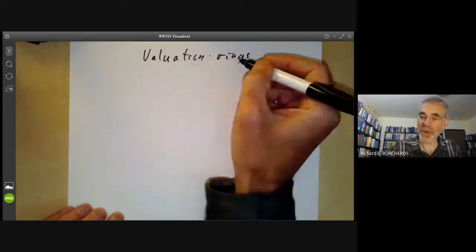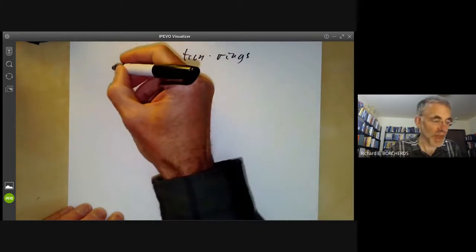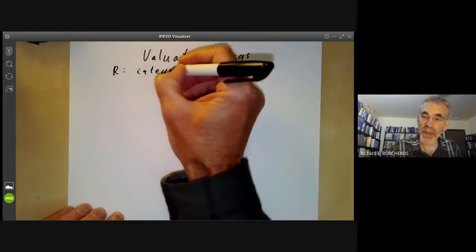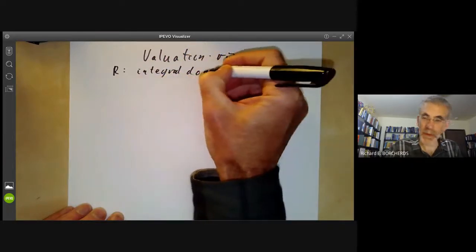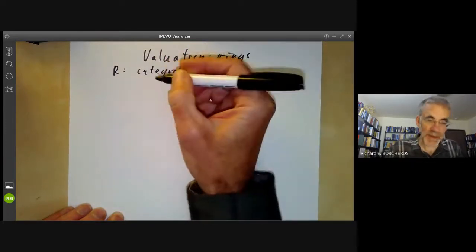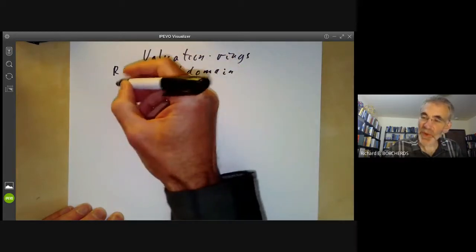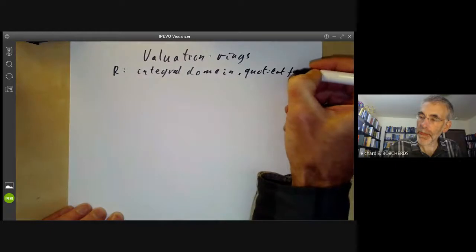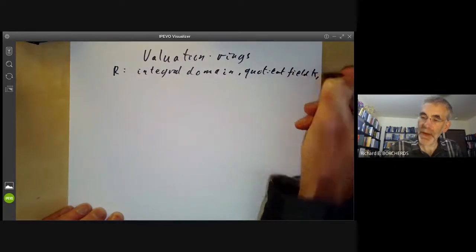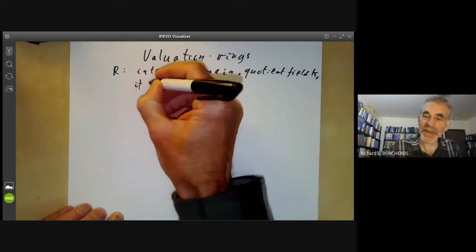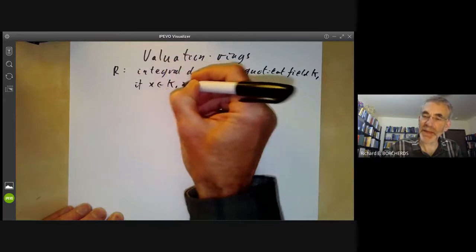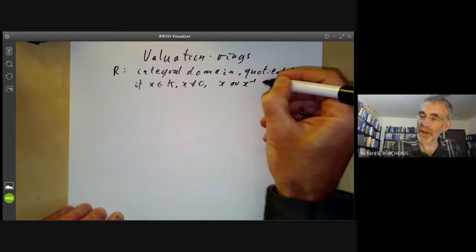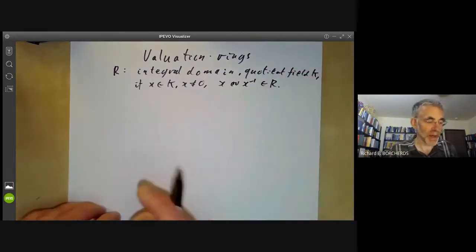Recall the definition of a valuation ring. R is a valuation ring if it is an integral domain with quotient field K, and it has the property that if X is in K and X is not zero, then X or X inverse is in the ring R.